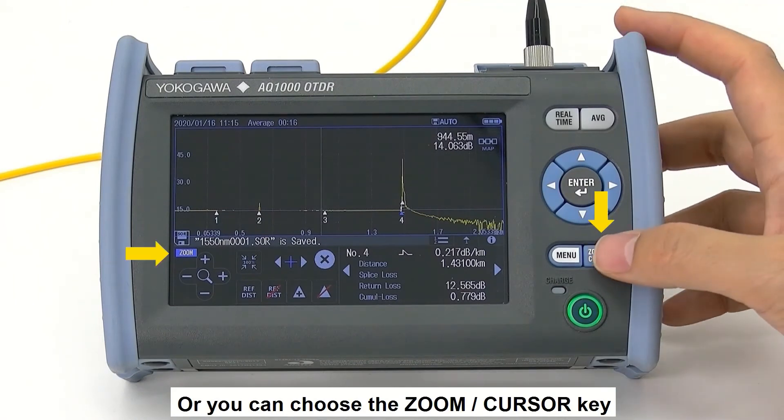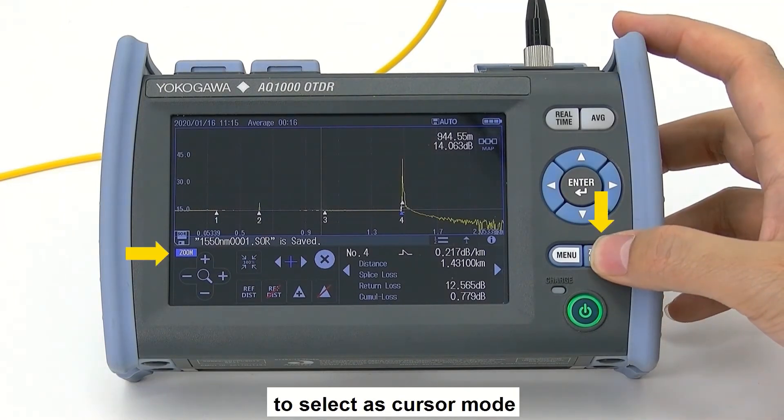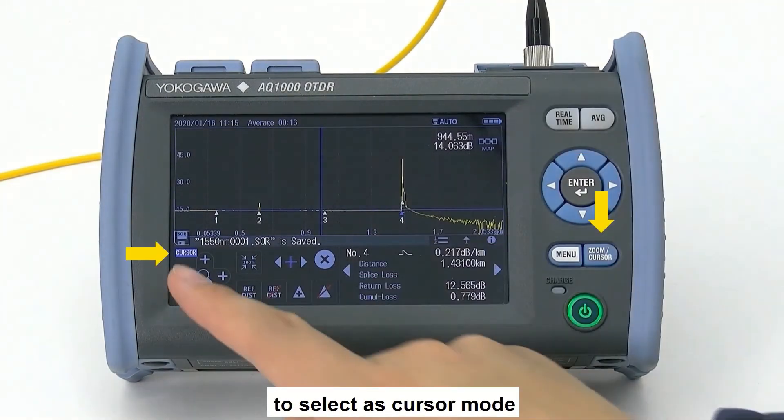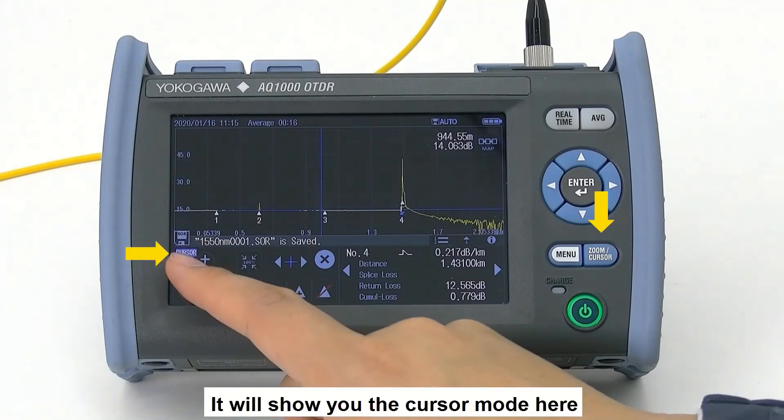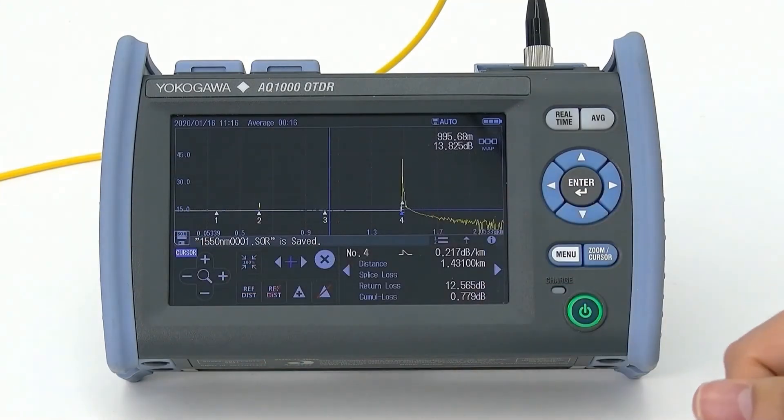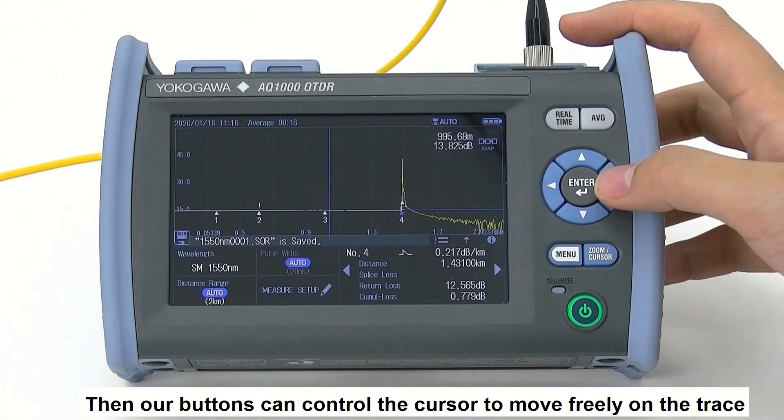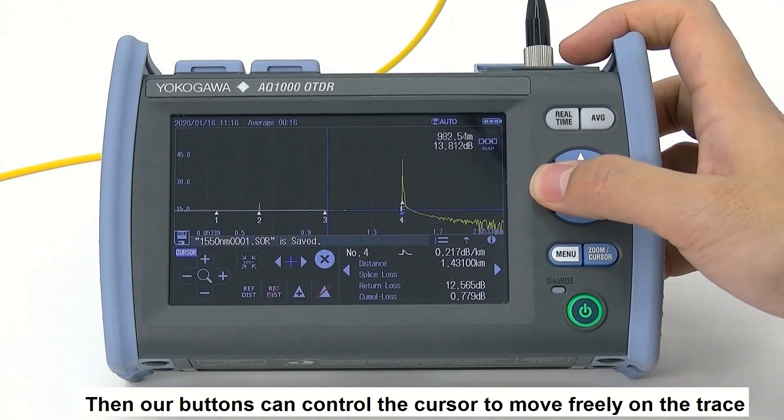You can choose the zoom cursor key to select cursor mode. It will show the cursor mode here. Then, our buttons can control the cursor to move freely on the trace.